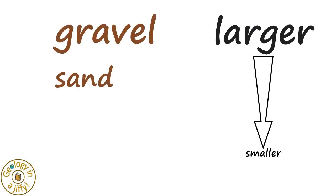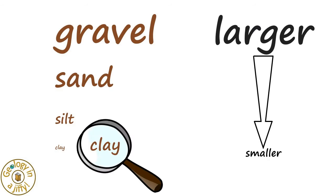Grains can range from larger down to smaller, sized from gravel, to sand, to silt, to clay, which is really small.